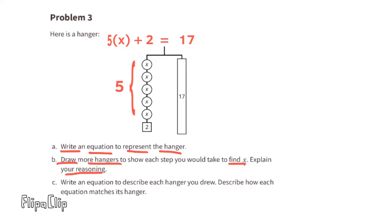Part b: Draw more hangers to show each step you would take to find x. Explain your reasoning. I'll start with a hanger with 5x + 2 balanced with the bar that's worth 17. I want to get the x's by itself so I need to remove 2 from the left side, but to keep it balanced I also need to remove 2 from the right side. 5x - 2 = 5x and 17 - 2 = 15.